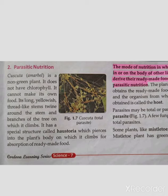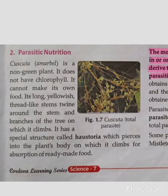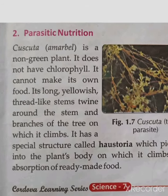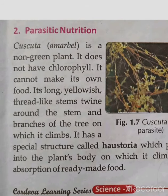You had already learned about parasitic nutrition in earlier classes like class 5th and 6th. Cuscuta, known as Amarbel in Hindi, is a non-green plant. It does not have chlorophyll and cannot make its own food.